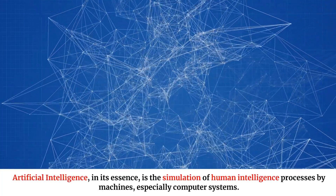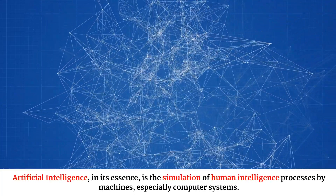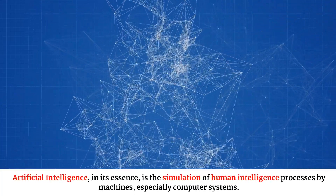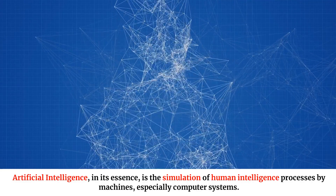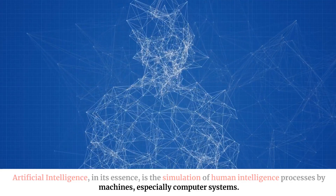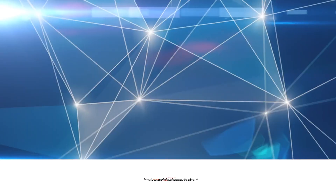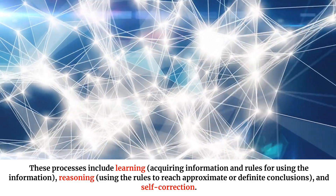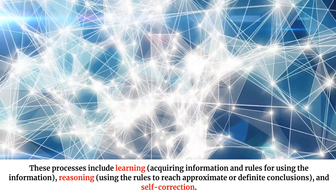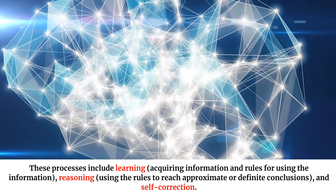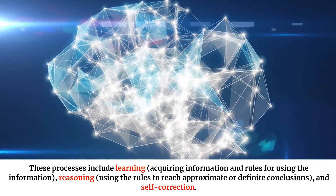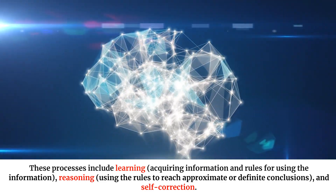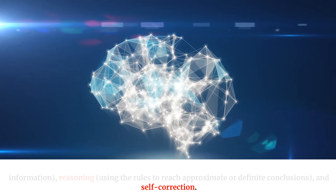Artificial intelligence, in its essence, is the simulation of human intelligence processes by machines, especially computer systems. These processes include learning — acquiring information and rules for using the information — reasoning, using the rules to reach approximate or definite conclusions, and self-correction.